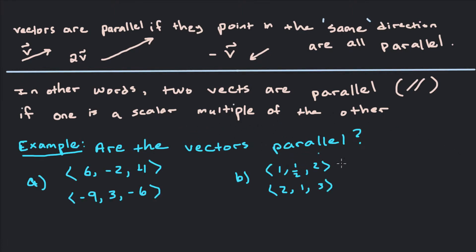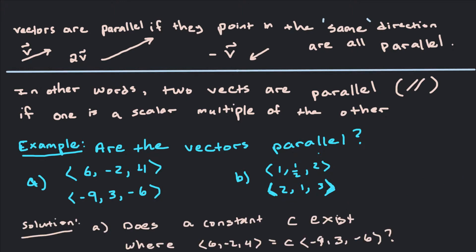So let's look at an example. Are these vectors parallel? Part A we have two vectors here we want to know if they're parallel. Part B we have two vectors we want to know if they're parallel. What does that mean?